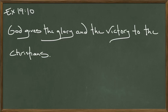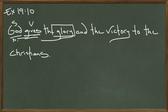The subject of the sentence is 'God' — it's in the nominative case. What's he doing? He's giving — that's a clue that there's an indirect object coming. What exactly is he giving? He's giving 'the glory,' that's the direct object, it receives the action. And he is also giving 'the victory,' another direct object, which also receives the action. He's giving the glory and the victory to the Christians.